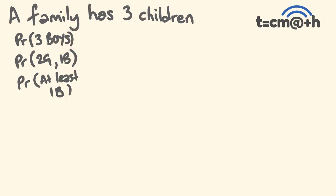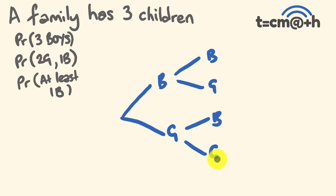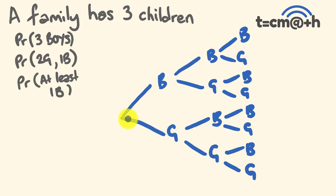For the very first child, you could end up with a boy or a girl. For the second child, from each branch you could get a boy or a girl. For the third child, from each of those branches you could again end up with a boy or a girl. So that's your tree diagram all set up.